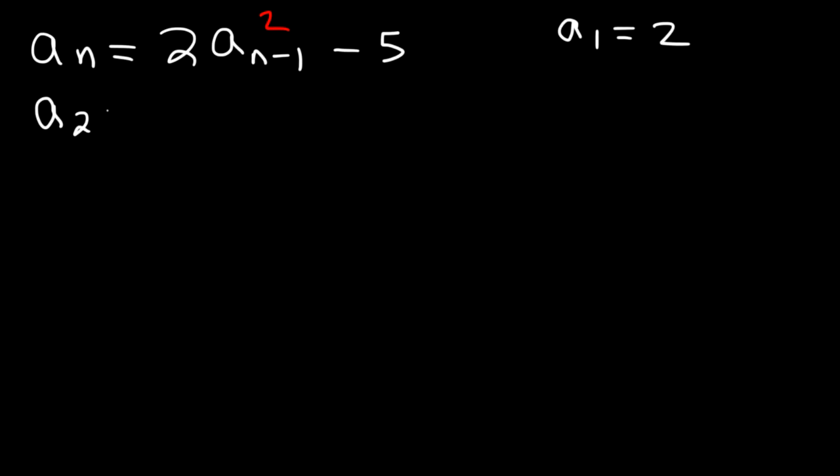So a_2 is 2 times the square of a_1 minus 5. So it's 2 times 2 squared minus 5. 2 squared is 4 times 2 is 8, minus 5, that's 3.